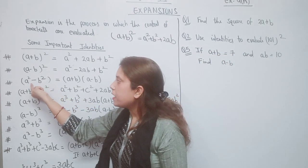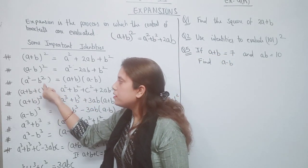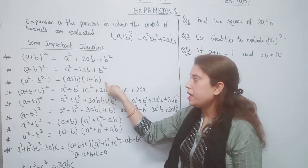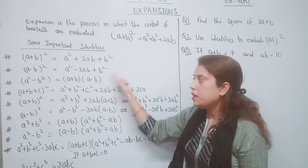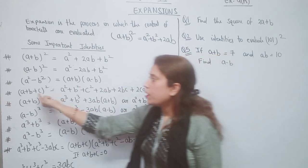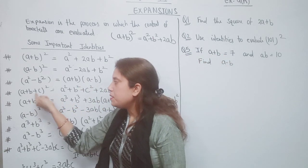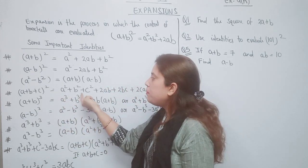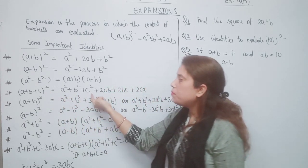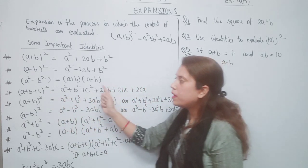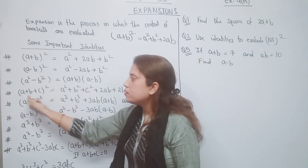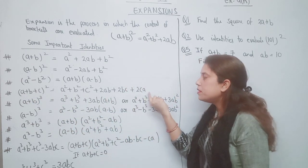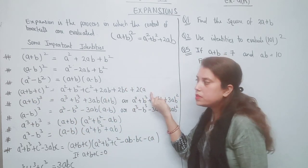The third identity: a²-b² = (a+b)(a-b). The fourth identity: (a+b+c)² = a²+b²+c²+2ab+2bc+2ca.